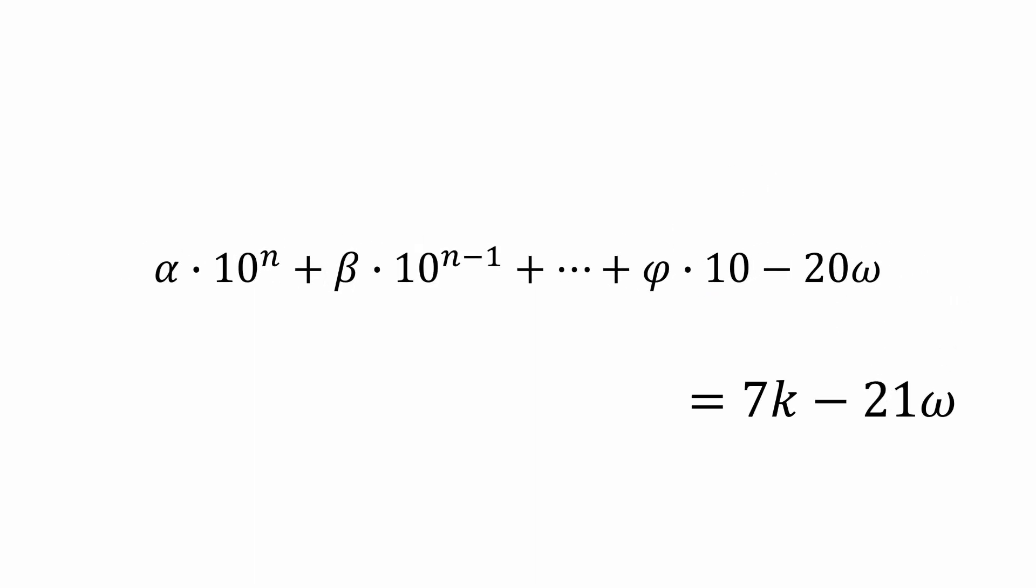When I do, notice that the right side is still a multiple of 7, which we want to maintain in order to find out when the left side is also a multiple of 7. Now let's factor out a 10 from the left side. Notice that all my exponents just got reduced by 1.